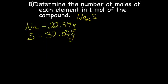Alright, the next step is to determine the number of moles of each element in one mole of the compound. So the subscripts here tell you the number of moles. Okay, so that means we have two moles of sodium and one mole of sulfur.